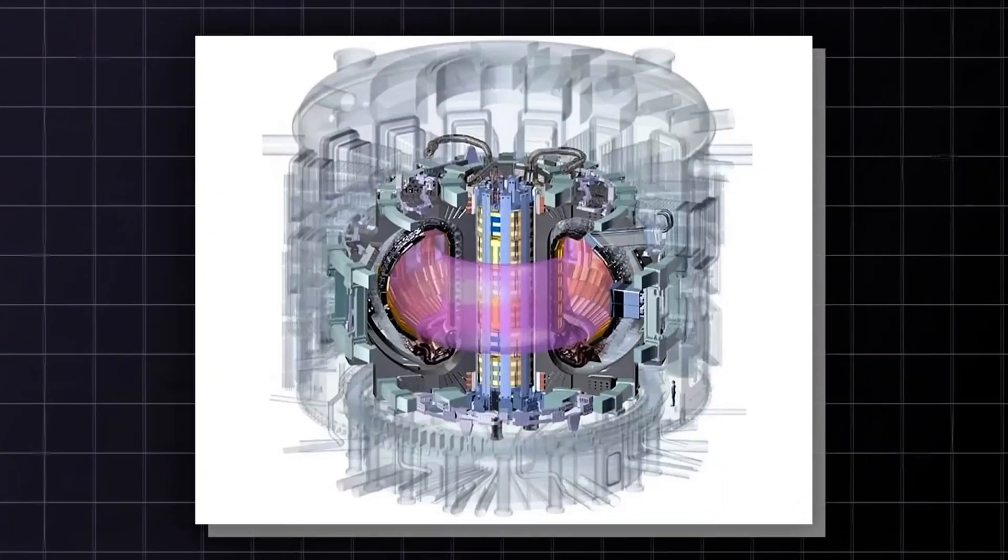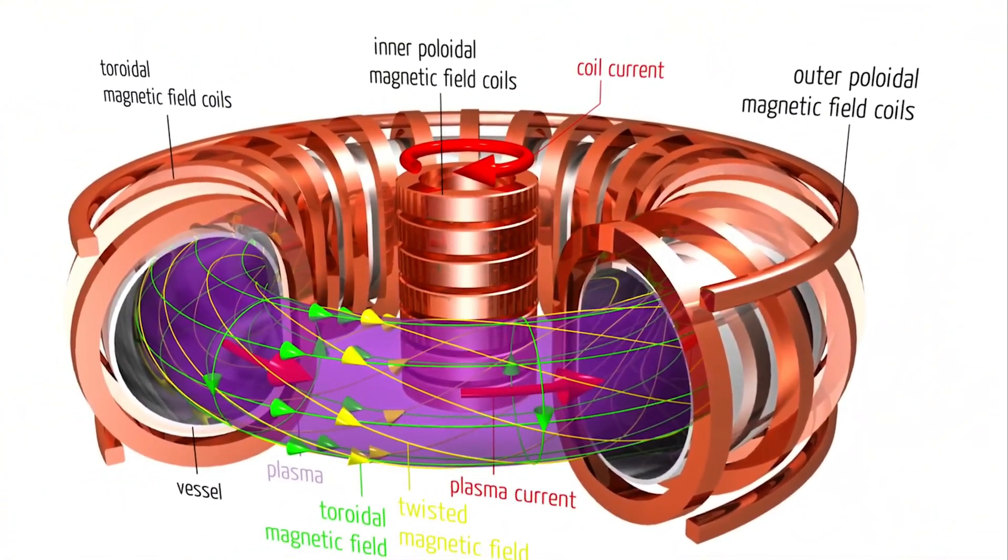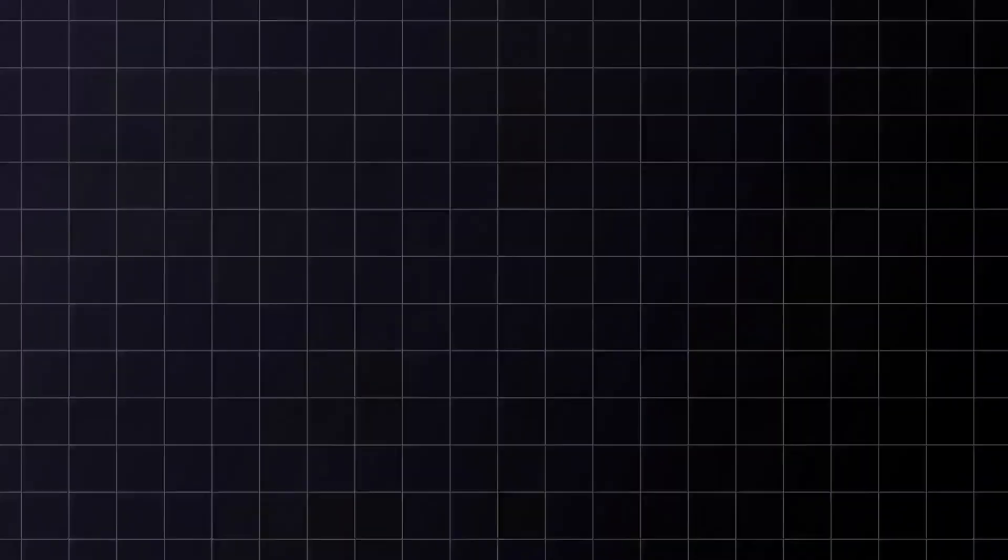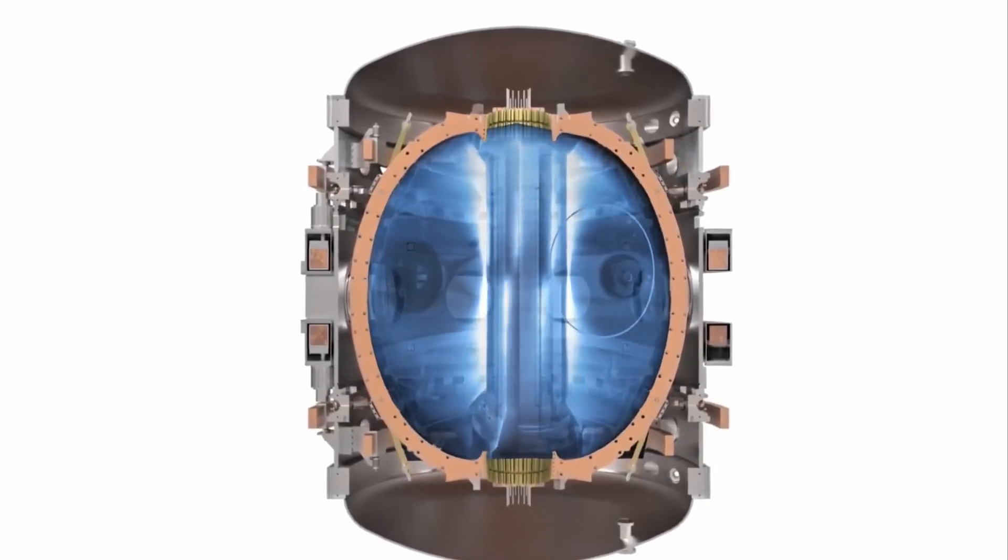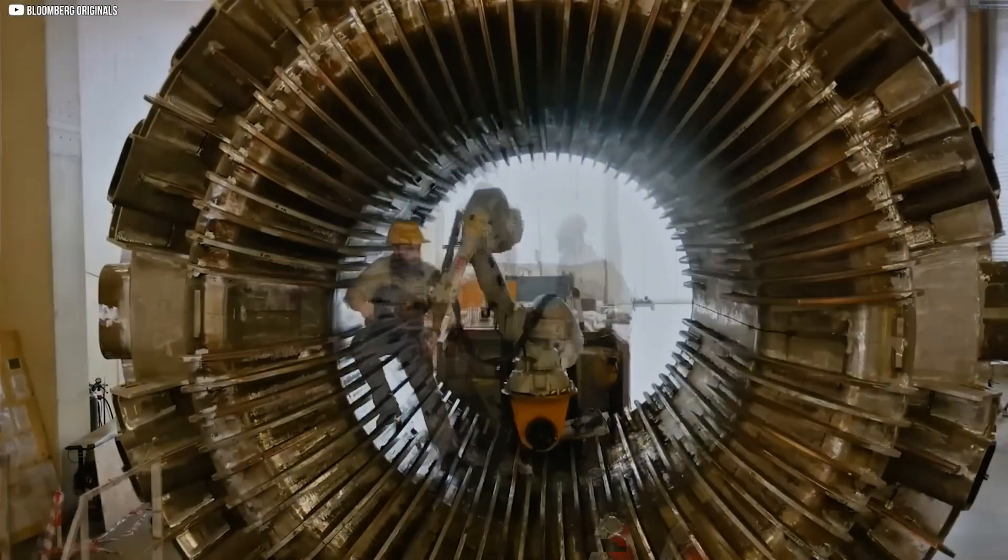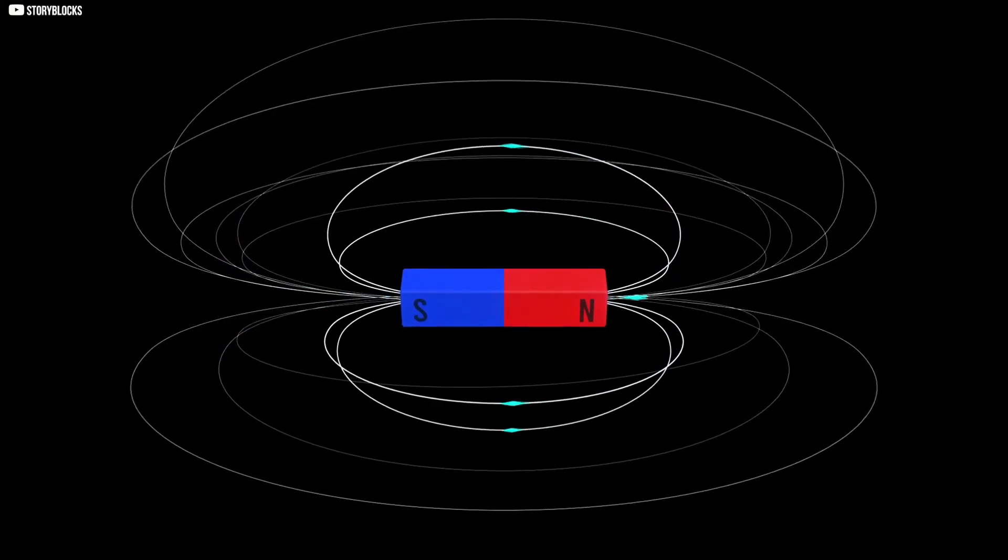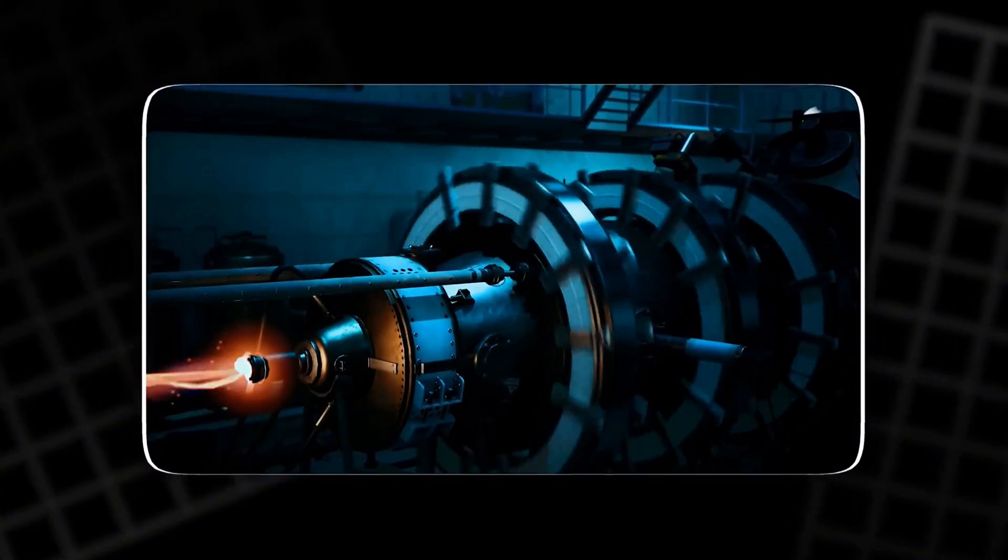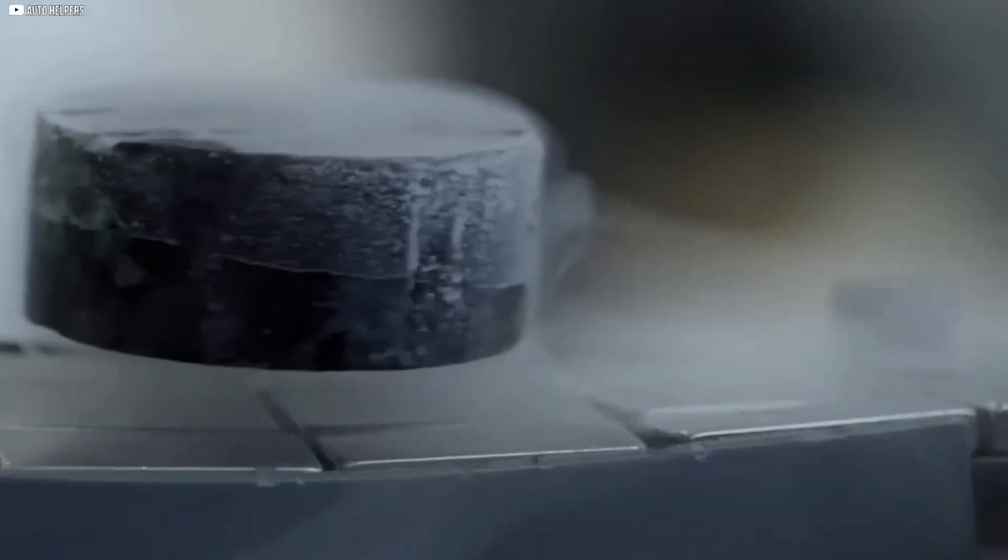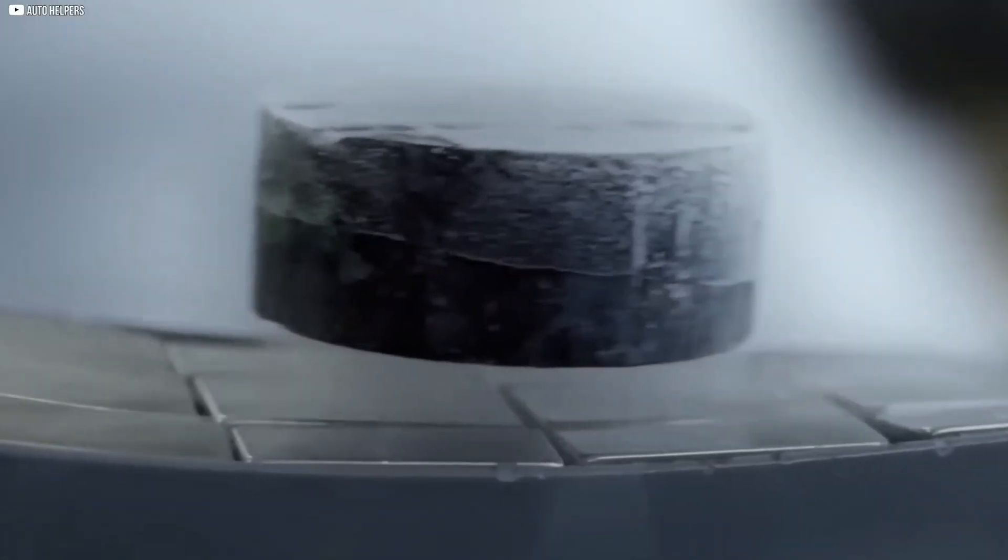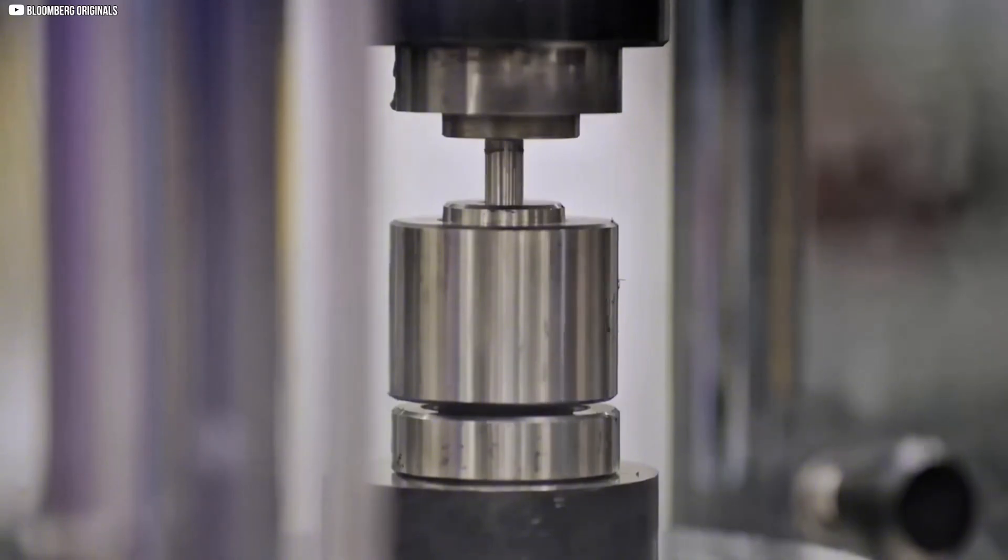A key technology behind Proxima Fusion's designs is the use of high temperature superconducting magnets. These are advanced magnets made from materials that become superconducting at higher temperatures than traditional magnets, allowing them to carry extremely strong currents without resistance. The main advantage of HTS magnets is that they can produce much stronger magnetic fields in a smaller space. Stronger fields improve plasma confinement, meaning Proxima can design a stellarator reactor that is physically smaller and more efficient than older designs.